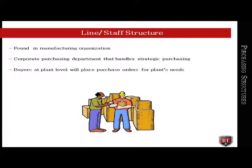Another form of purchasing structure is line/staff organization, which can be found in manufacturing organizations. There will be a corporate purchasing department that handles strategic purchasing — functions such as corporate contracts, price negotiation, and terms and conditions will be the responsibility of the corporate purchasing professional. The buyers at the plant level will place purchase orders for the plant's needs, using the suppliers that corporate has set up contracts with and done the negotiations with.